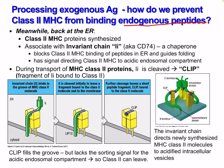How do we prevent class 2 MHC from binding to endogenous peptides? In the endoplasmic reticulum, class 2 MHC proteins are synthesized. These associate with invariant chains, or Ii, also known as CD74, which is the chaperone. This invariant chain blocks class 2 MHC binding of peptides in the endoplasmic reticulum and guides folding. It has signals directing class 2 MHC to the acidic endosomal compartment.